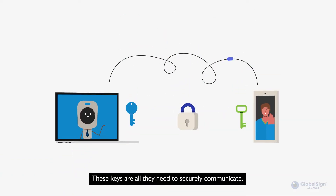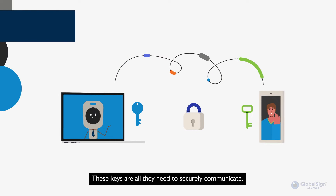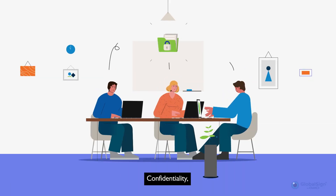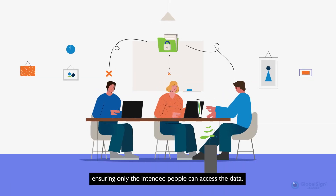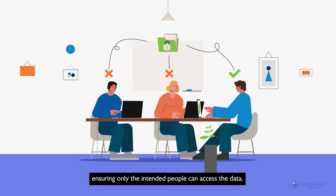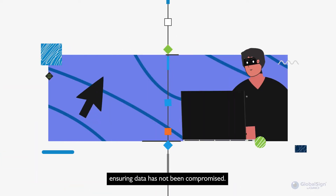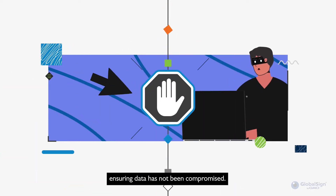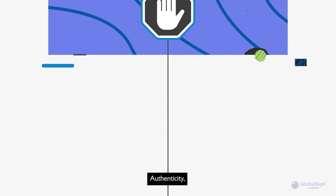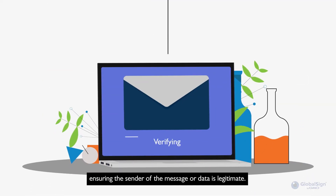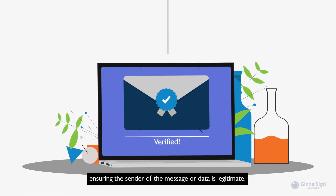These keys are all they need to securely communicate. PKI ensures confidentiality — ensuring only the intended people can access the data; integrity — ensuring data has not been compromised; and authenticity — ensuring the sender of the message or data is legitimate.